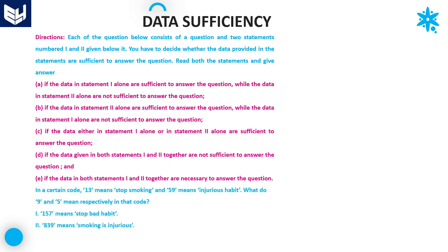Let's move on to the next question. In a certain code: 1, 3 means 'stop smoking'; 5, 9 means 'injurious habit'. What do 9 and 5 mean respectively in that code? We want to find what 5 represents and what 9 represents. Now, statement 1 gives us: 1, 5, 7 means 'stop bad habit'.